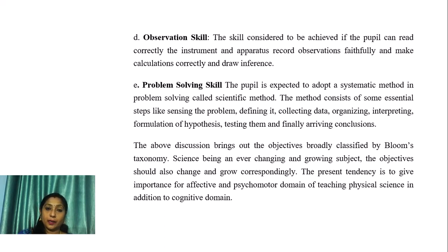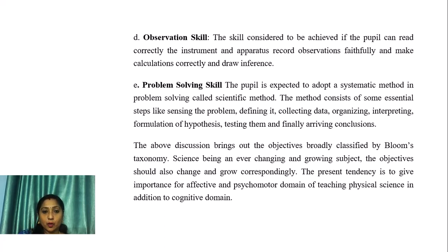Observation skill requires that students read instruments and apparatus correctly, record observations faithfully, make calculations correctly, and draw inferences. Problem-solving skill requires the student to adopt the scientific method, consisting of steps like sensing the problem, defining it, collecting data, organizing, interpreting, formulating a hypothesis, testing it, and finally arriving at conclusions.